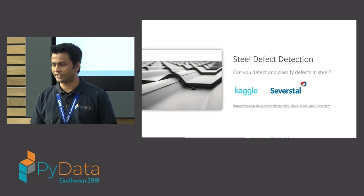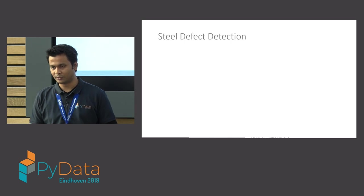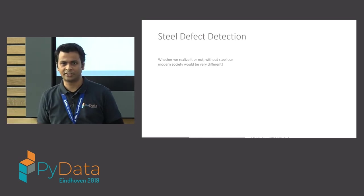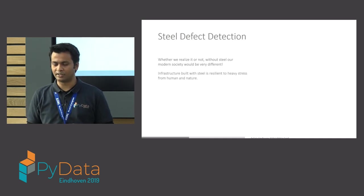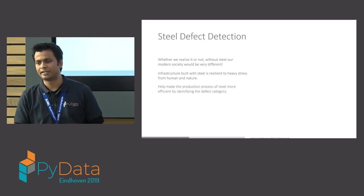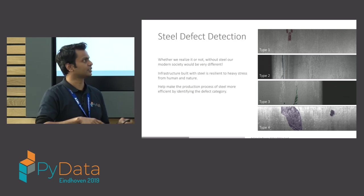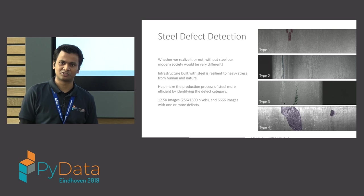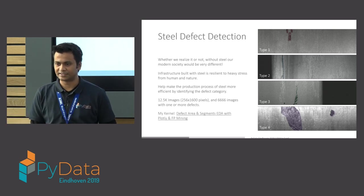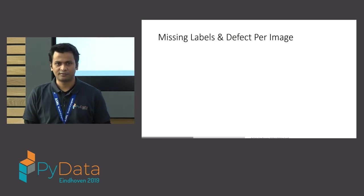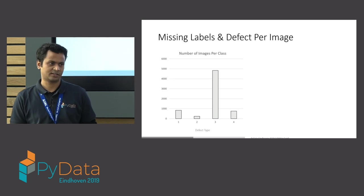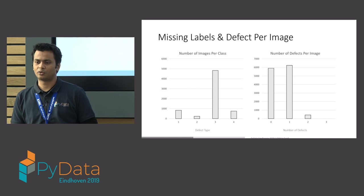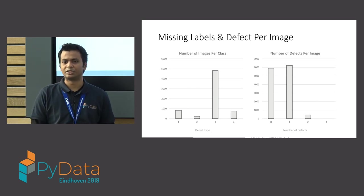The second challenge is about steel defect detection. This challenge is about detecting different types of defects on steel — modern society would not really be possible without steel — and our aim is to make the production process more efficient. You have four types of defects, and there are about 12.5K images that are somewhat high resolution. As always, I checked the different classes and how well they're represented. Type three is way over-represented, and the rest are not so well represented. Furthermore, there are also a lot of images without any defects.